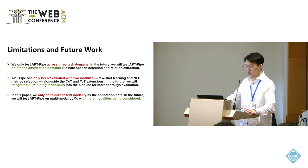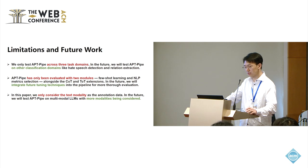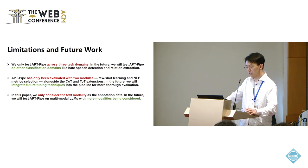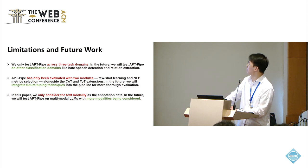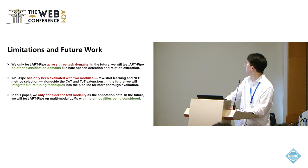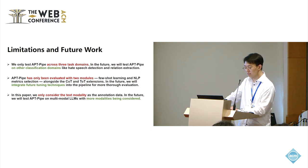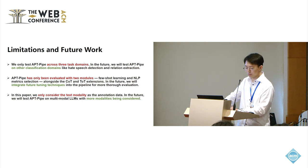There are some limitations in this work that will inspire future work. First, we only test APTPipe across three task domains; in the future, we will test it on other classification domains such as hate speech detection and relation extraction. Second, this paper only evaluates APTPipe on two modules — few-shot learning and NLP metric selection — alongside CoT and ToT extensions; in the future we will integrate further tuning techniques for more thorough evaluation. Third, this paper only considers text modality as the annotation data; in the future, we will test APTPipe on multimodal LLMs with more modalities.